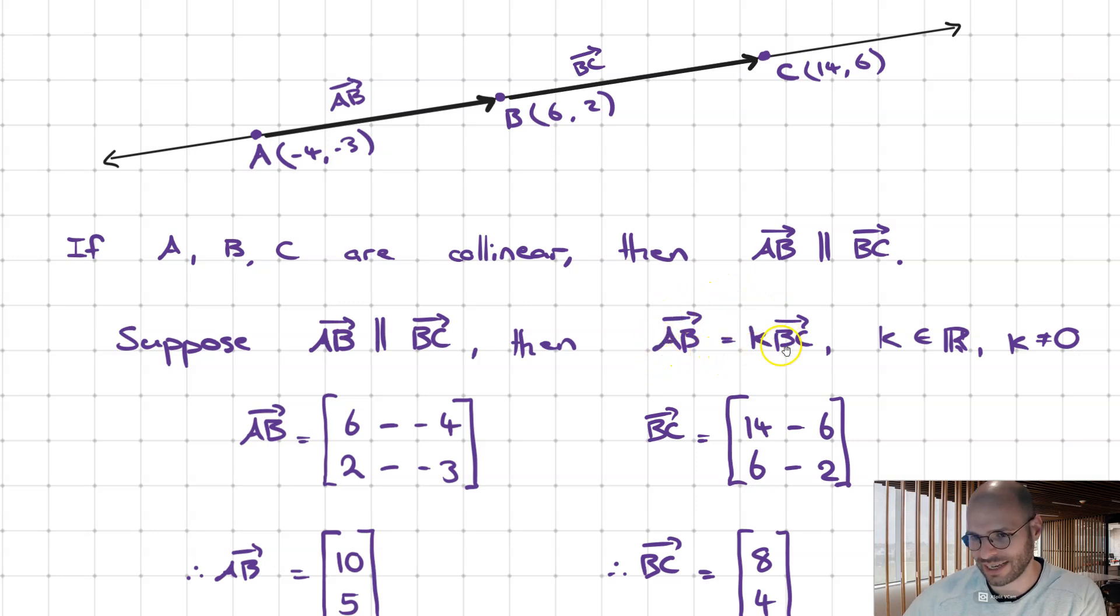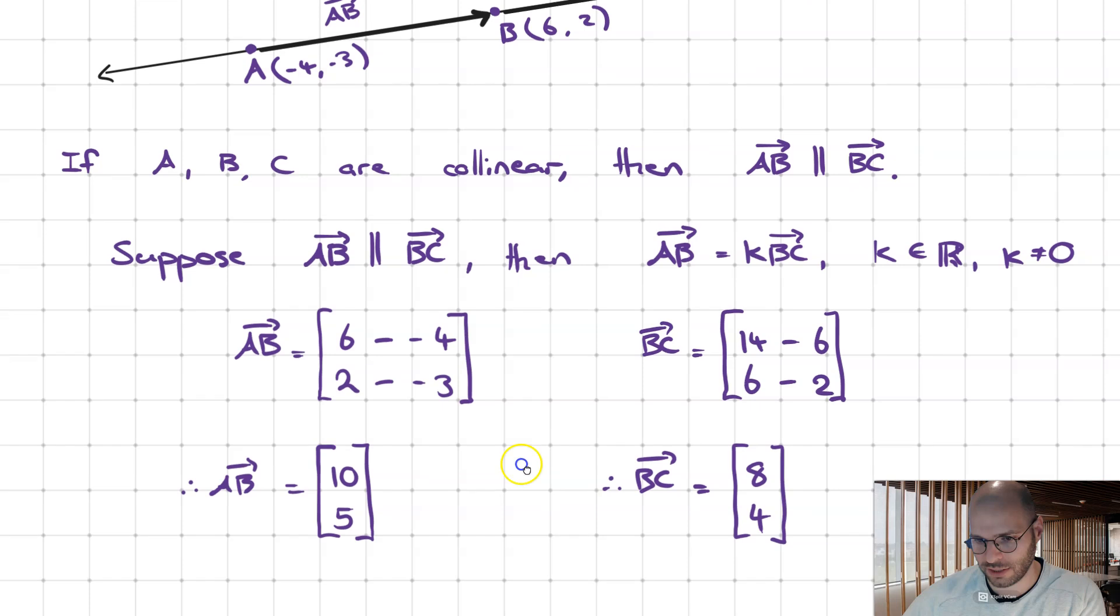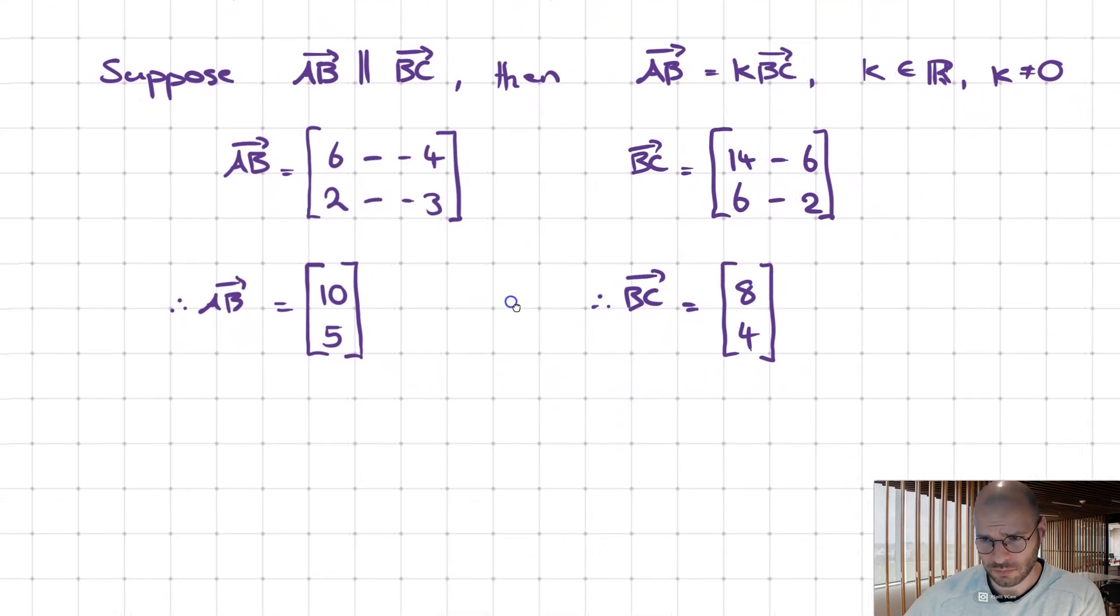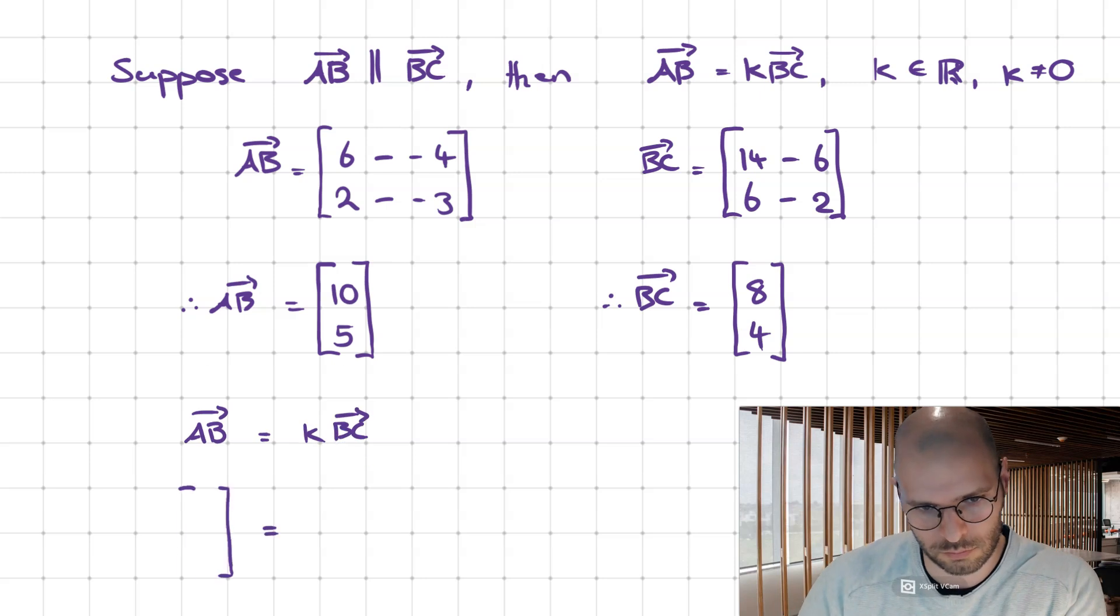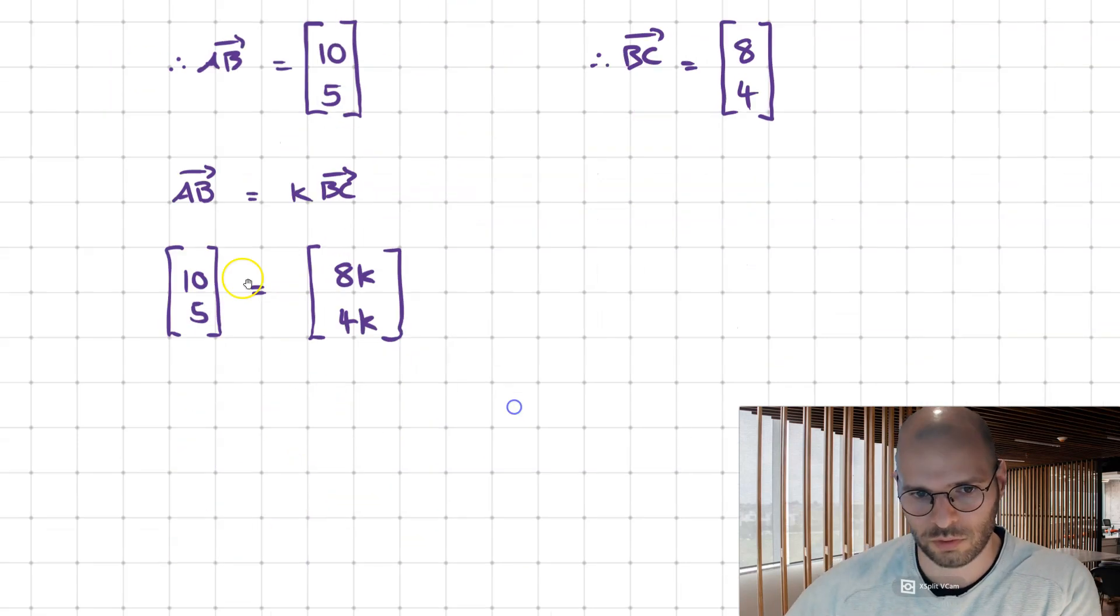AB is equal to k times vector BC if they're parallel. So we finally get the following.